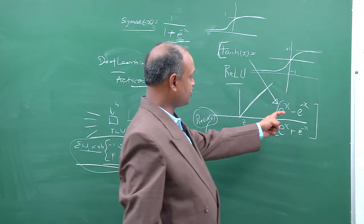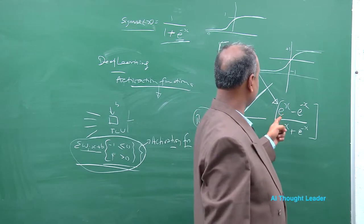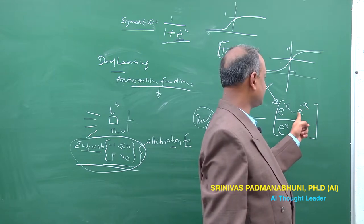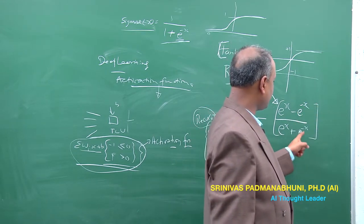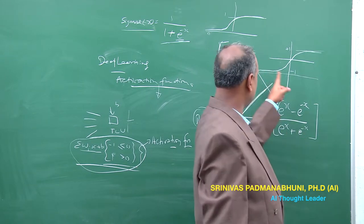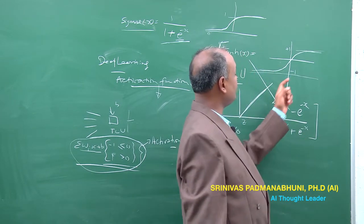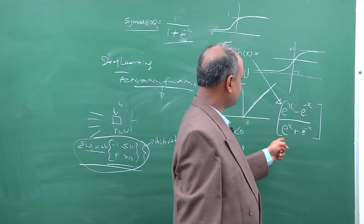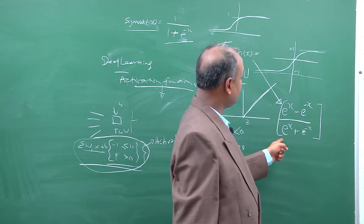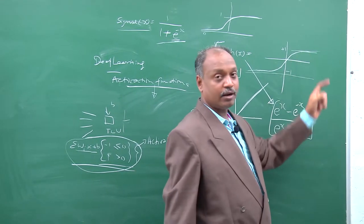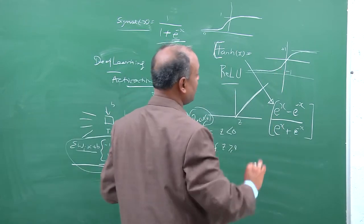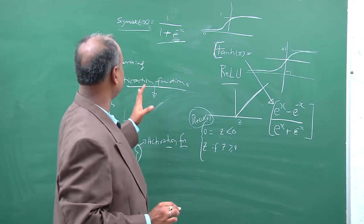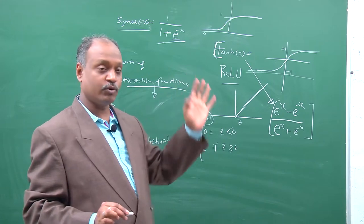For example, if X is minus infinity, the numerator becomes minus e^(+infinity) and the denominator becomes e^(+infinity), giving minus 1. On the other hand, if X is very large, e^X dominates and the result approaches 1. So tanh oscillates between 1 and minus 1, and is generally considered a better activation function than the classical Sigmoid, which is one-sided in terms of only positive output.